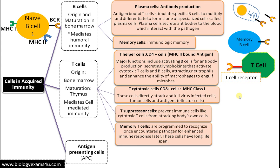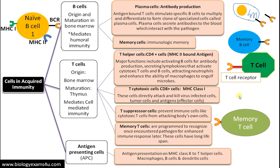Finally, there are memory T cells, just as there are memory B cells, and these are responsible for immunologic memory. Regarding antigen presenting cells: all nucleated cells have MHC class 1, but antigen presenting cells specifically have MHC class 2, which can interact with T helper cells — the commander of the immune system. Antigen presenting cells degrade the antigen and present it on MHC class 2, so that T helper cells can activate other immune cells to eliminate that particular pathogen.